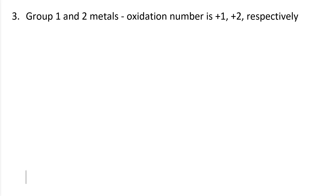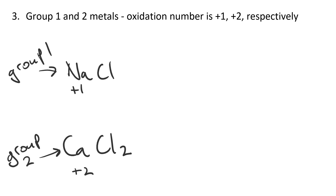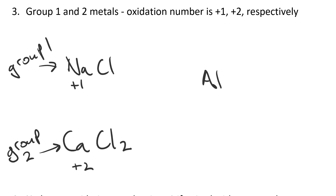For group one and two metals, the oxidation number is plus one and plus two respectively when they're in a compound. For example, in NaCl, sodium is group one, so its oxidation number is plus one. In CaCl₂, calcium is group two, so its oxidation number is plus two. We can also add that aluminum will always be plus three.